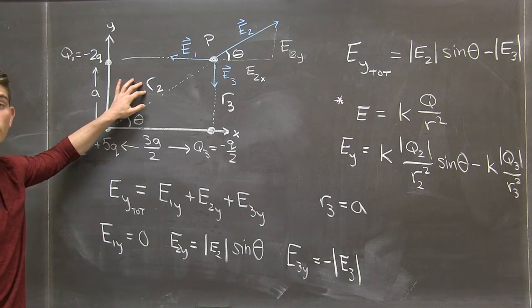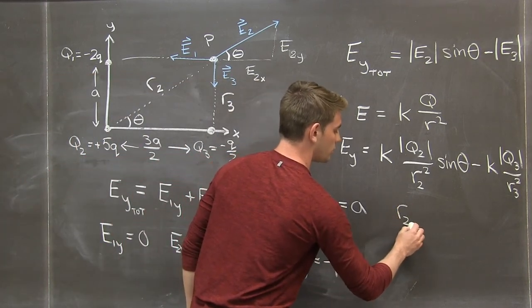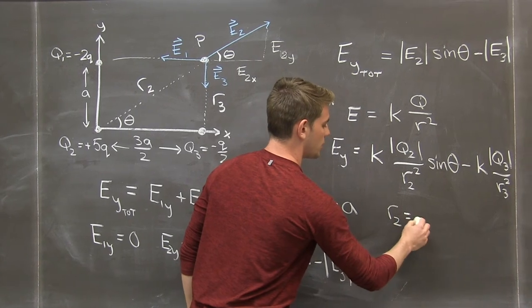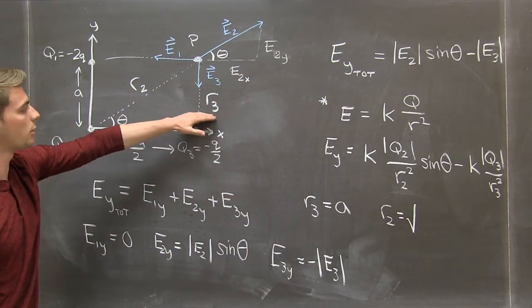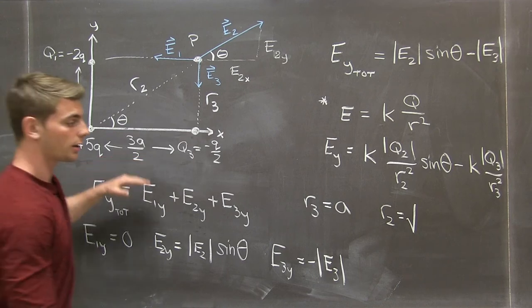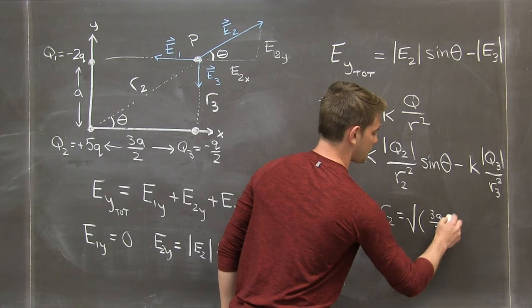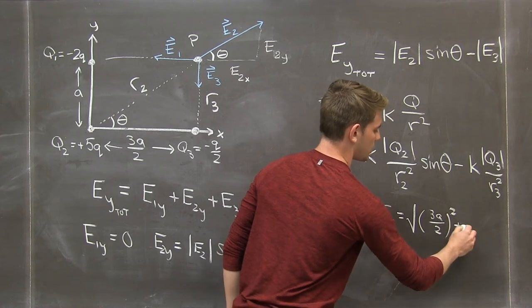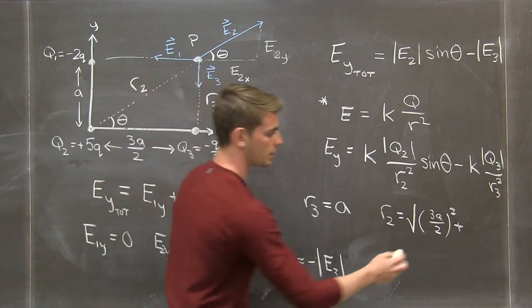Now r2 is given by Pythagorean theorem. That is that r2 is going to be the square root of the lengths of the sides squared, so 3a over 2 all squared, plus the other side r3 which we know is a squared.